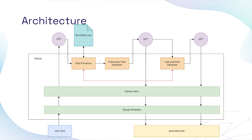We implemented the front and backend using the Django framework, and we built a data processor and two plan generators in the backend. Our software needs to interact with GPT several times to generate a plan. It will first interact with GPT to convert the user input into JSON format. The data processor will parse the JSON format into information and do web scraping based on that. It will then pass everything to the preliminary plan generator or improved plan generator, which will construct a system prompt using all the information and send the prompt to GPT. GPT will send back either a preliminary plan or improved plan to the user.